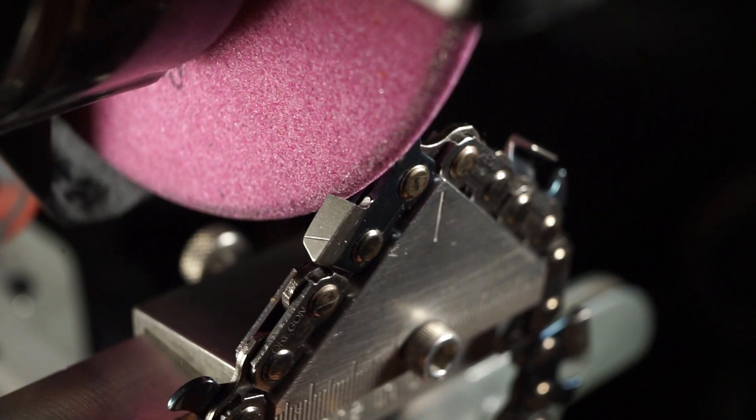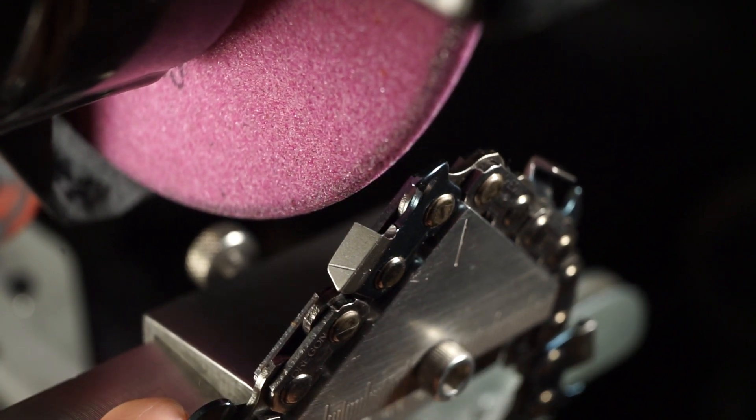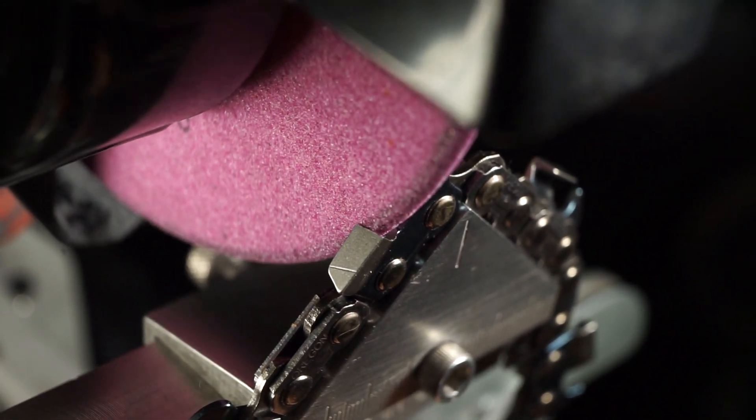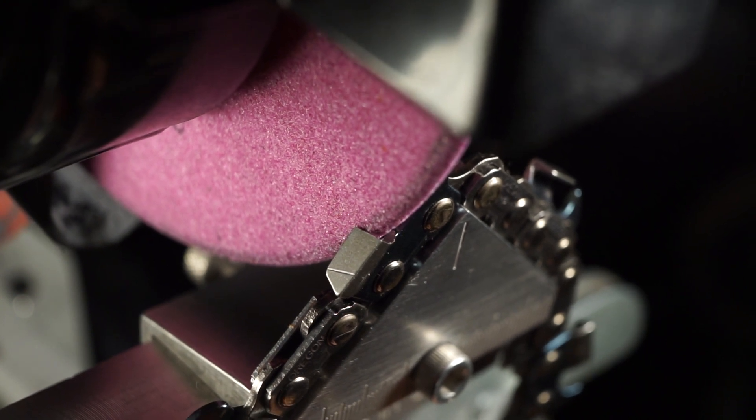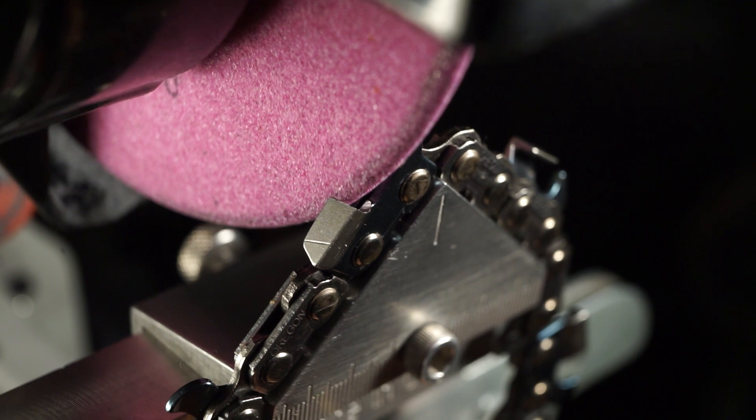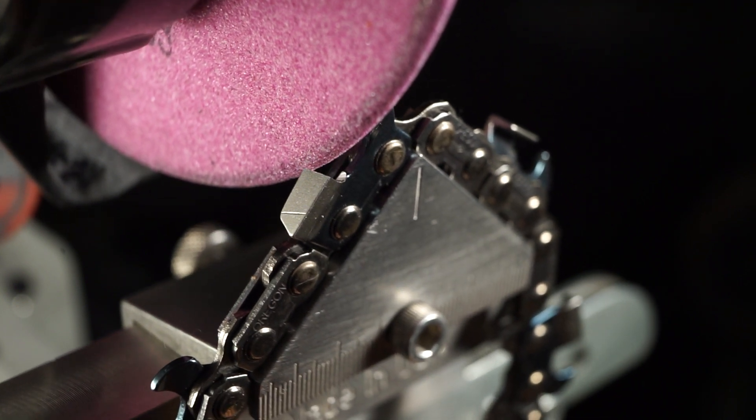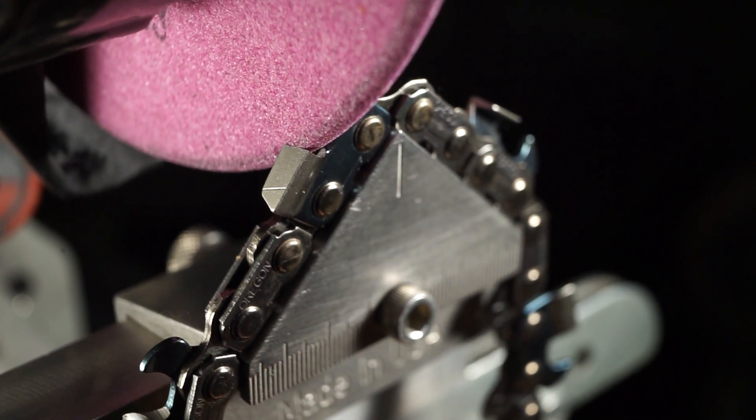When adjusting side plate sharpness with a brand new aluminum oxide wheel, you want to have your 10 degree tilt all the way forward. As your wheel dresses down it becomes smaller in diameter, so you can follow the wheel with the 10 degree tilt.